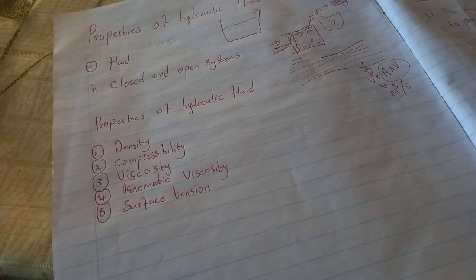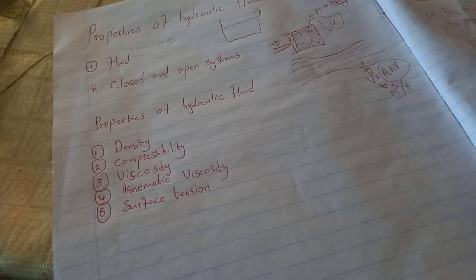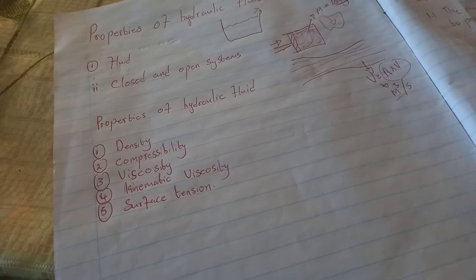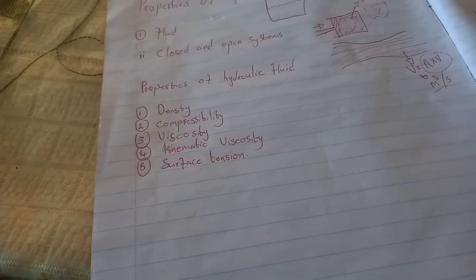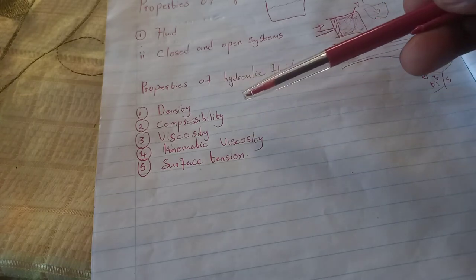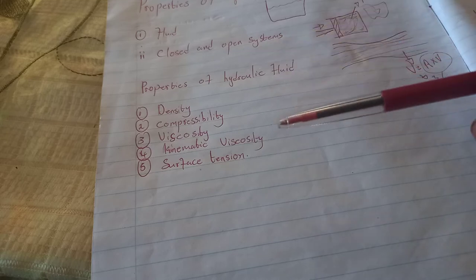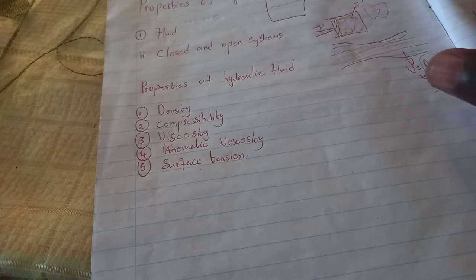So now we know that when dealing with the properties of hydraulic fluids, we have two systems: a closed system and an open system. Now we need to discuss the properties of a hydraulic fluid. These properties are: density, compressibility, viscosity, kinematic viscosity, and surface tension.